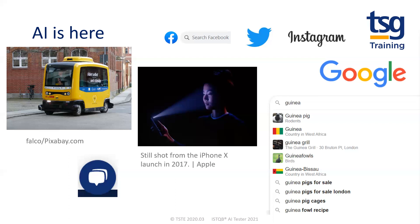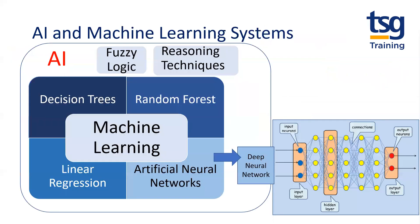So AI is here and it needs testing — it's a specialist area, hence the new course. AI can be implemented using a wide range of technologies like fuzzy logic, reasoning techniques and machine learning, but this course focuses on machine learning. There are numerous machine learning techniques, some shown here, like decision trees, random forests, linear regression and artificial neural networks.